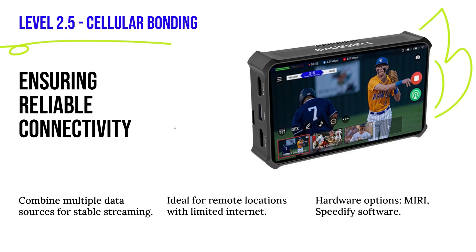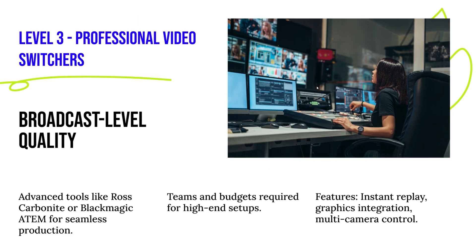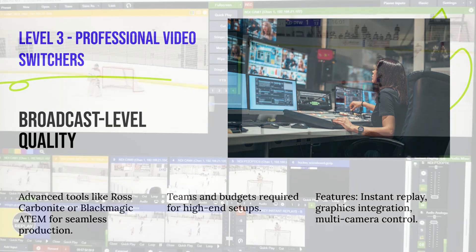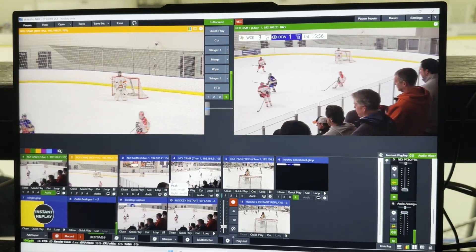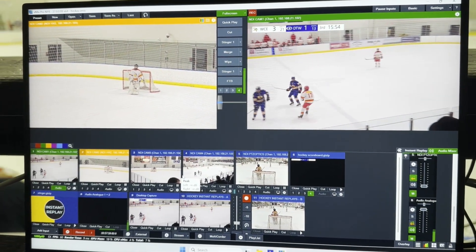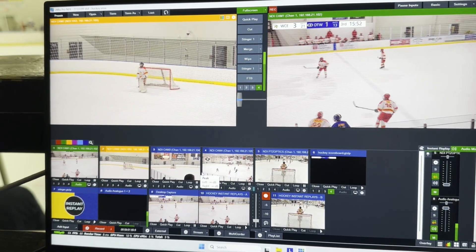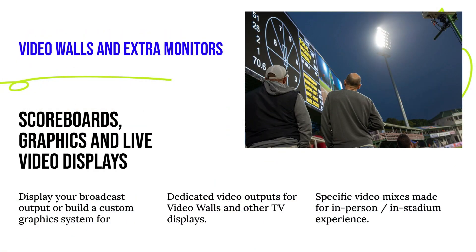Cellular bonding — combining Wi-Fi and cellular connectivity into a powerful live stream connection — is also popular at this level. Level Three is where you're getting broadcast quality: graphics overlays, instant replay, video switching. And Level Three into Level Four is about getting information up to a video wall.